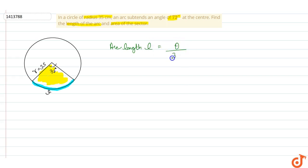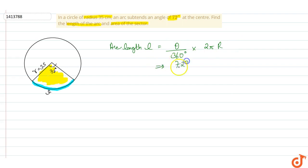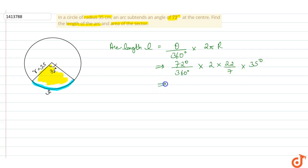The formula for the length of the arc is theta over 360 degrees, into 2 pi r. Substituting: theta is 72 degrees by 360 degrees, into 2, pi is 22 by 7, and radius is 35. Here is the length of the arc — the length of the arc is 44 cm.